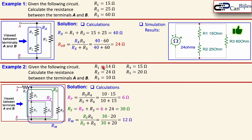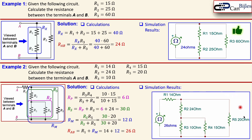We now know the effective resistance from that node is 12 ohms. R1 = 14 ohms is in series with Rm, so R_ab = R1 plus Rm = 14 plus 12 = 26 ohms. The simulation confirms this — the ohmmeter between nodes A and B reads 26 ohms — verified.